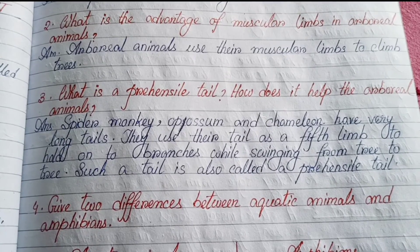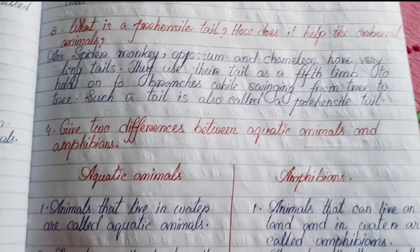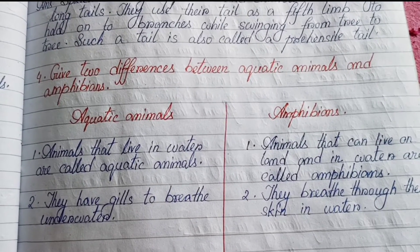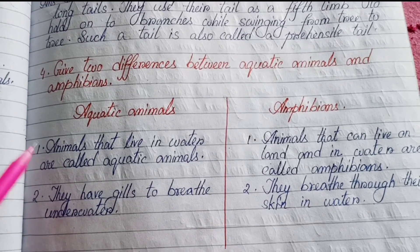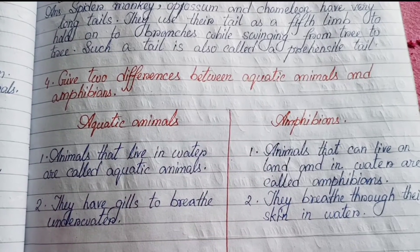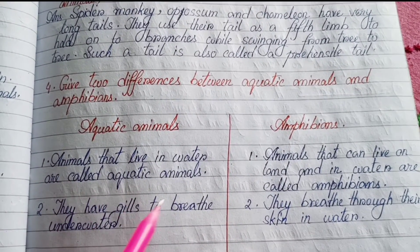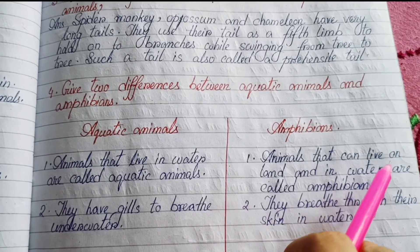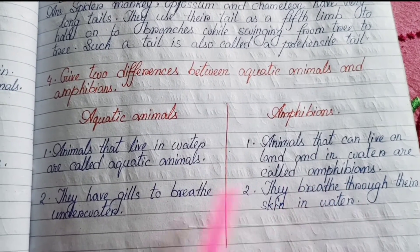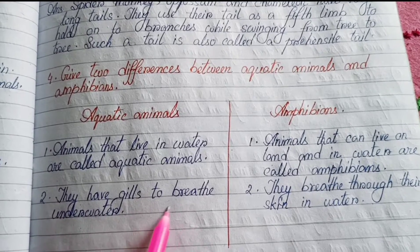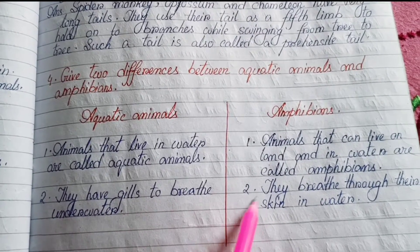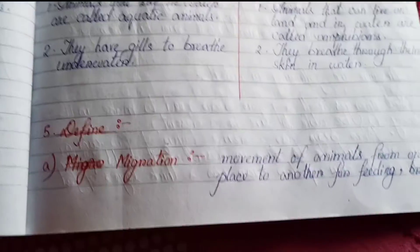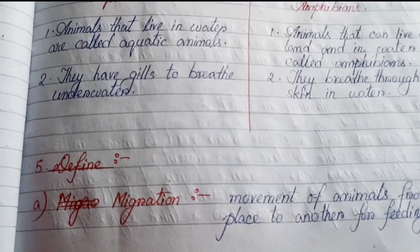Such a tail is called a prehensile tail. Number four — Give two differences between aquatic animals and amphibians. Aquatic animals: animals that live in water are called aquatic animals; they have gills to breathe underwater. Amphibians: animals that can live both on land and in water are called amphibians; they breathe through their skin in water.